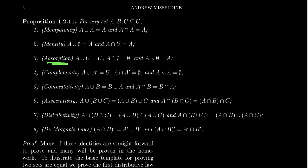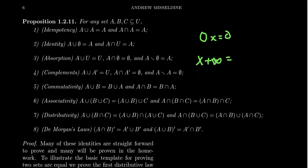The next one is the absorption property. If we take A union the universe, that always gives back the universe. Or if we take A intersect the empty set, we always get back the empty set. So if you operate by this dominant element — the universe with respect to unions, or the empty set with respect to intersections — you always get back that dominant element. We see this with number systems too: 0 times x always gives you back 0. Or x plus infinity — infinity is the dominant element in that sense, since something plus infinity equals infinity.